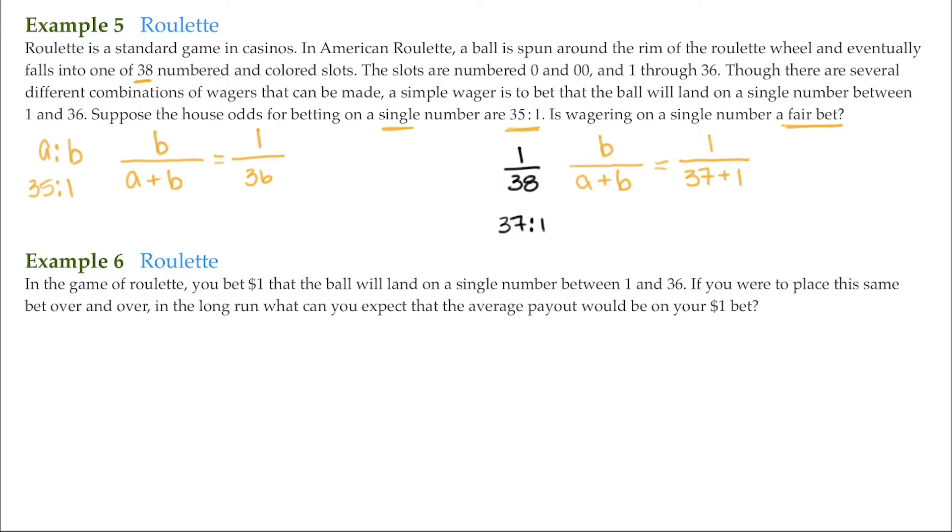Now for example 6, in the game of roulette, you bet $1 that the ball will land on a single number between 1 and 36. That's the same scenario as the previous example here. If you were to place this same bet over and over, in the long run, what can you expect that the average payout would be on your $1 bet? So a couple of things certainly to point out here: we have in the long run, and what can you expect?